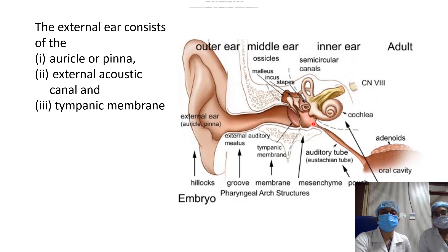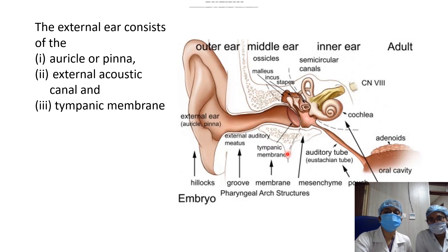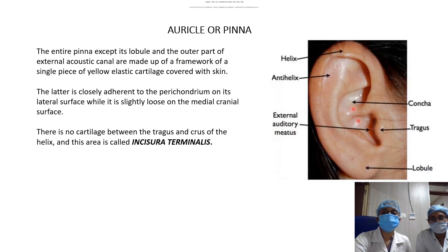The external acoustic meatus and the internal acoustic meatus are usually on the same axis. The external acoustic meatus has two portions: the bony portion, formed by the tympanic part of the temporal bone, and the cartilaginous portion, which is continuous with the cartilage of the pinna.